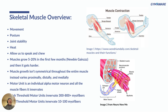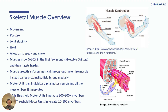Muscles grow five to twenty percent in the first few months — that's the newbie gains everyone talks about. After that, you actually have to know what you're doing to get those hard-earned gains. Muscle growth isn't symmetrical throughout the entire muscle; it varies proximally, distally, and medially. If I do curls, my biceps are going to grow differently in different regions depending on the type of exercise used — which is a good reason to use a variety of exercises.